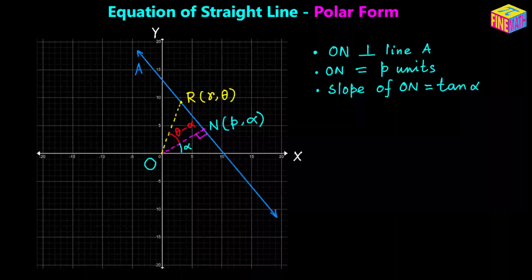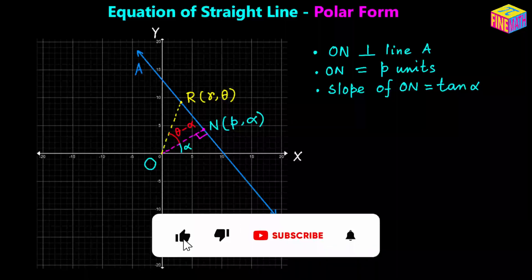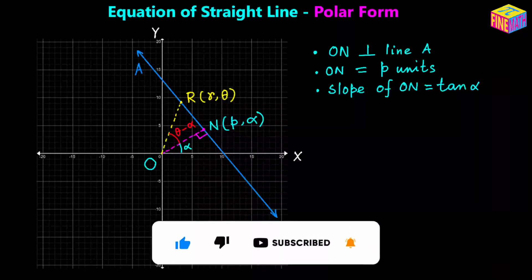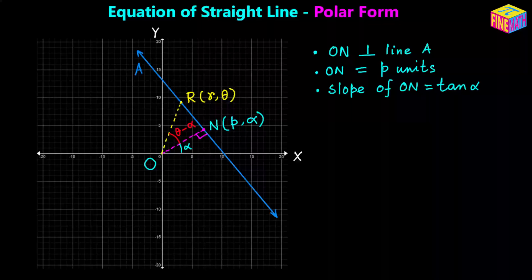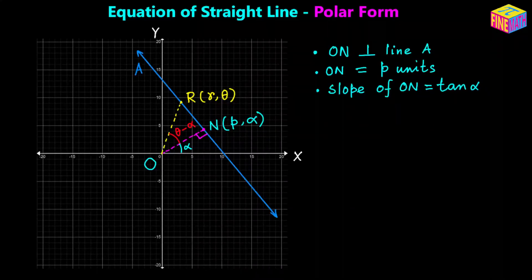There is a point N on the line whose polar coordinates are p comma alpha, and ON is a perpendicular on the straight line A. That means lowercase p is the distance of the straight line from the origin. So p indicates the distance of the straight line from the origin, and alpha indicates the angle that ON makes with the positive direction of the x-axis.